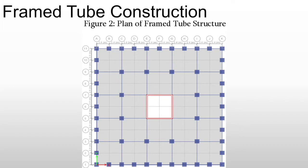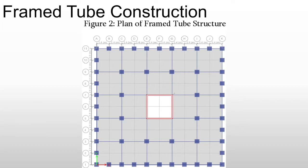The biggest change we're going to see is called framed tube construction. Just like the international style, we have a core — this is usually where the staircases, the elevators, and maintenance exist in the center of the building. But in the international style, everything would be cantilevered off and there would be a facade that's non-structural.